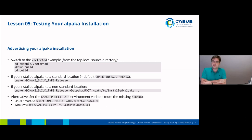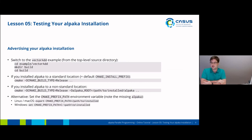For now, we will use the vector add example from the default ALPACA source directory. To access this example, first switch back to the top level source directory of ALPACA, then switch into the example/vector_add directory. Create a local build directory, switch to it, and now we need to point to your actual ALPACA installation.